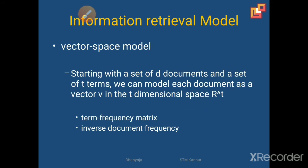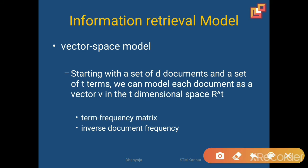In the case of the text retrieval or information retrieval model, one important model is the vector space model. The main concept behind the vector space model is we start with a document D and a set of terms T. We can model each document as a vector in a dimensional space of R raised to T. In the vector space model, we consider two important terms: term frequency and inverse document frequency.